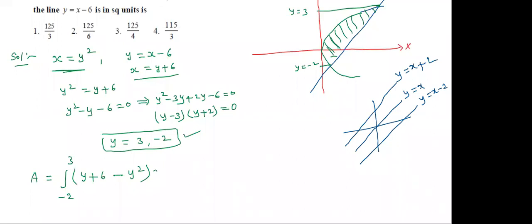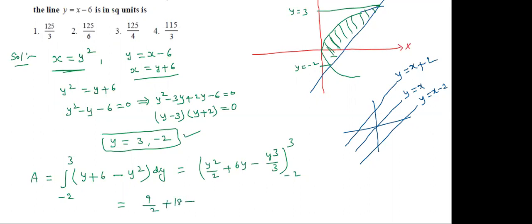Integrating: y²/2 + 6y - y³/3, evaluated from -2 to 3. Upper limit (y=3): 9/2 + 18 - 9 = 9/2 + 9. Lower limit (y=-2): 4/2 - 12 - (-8)/3 = 2 - 12 + 8/3.